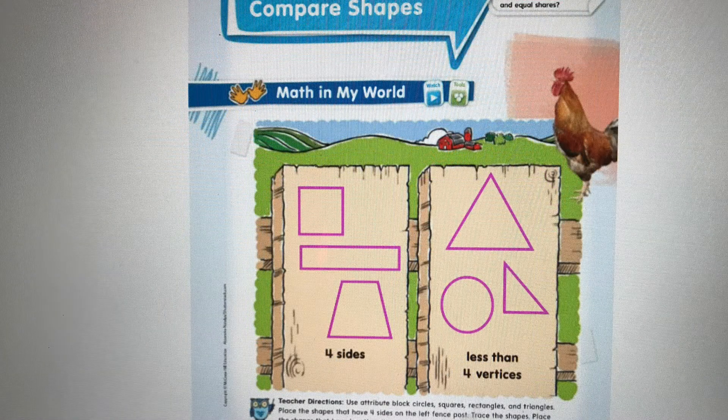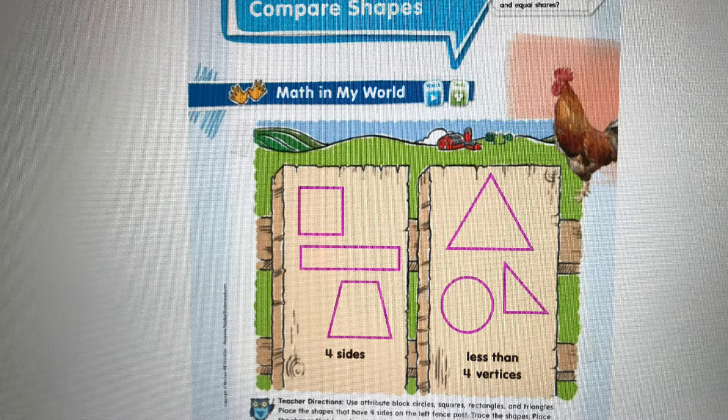Your paper should look something similar to this. It's okay if it doesn't look the exact same or have the same size of shapes, but you should have a square, rectangle, and trapezoid on the left, and a circle and a triangle, maybe another different size of triangle, on the right.